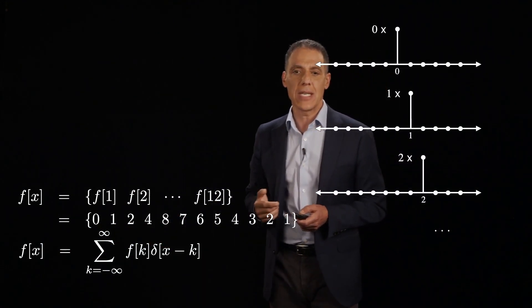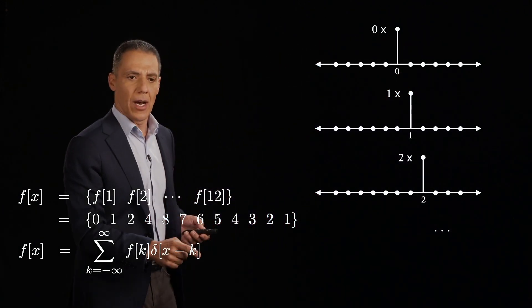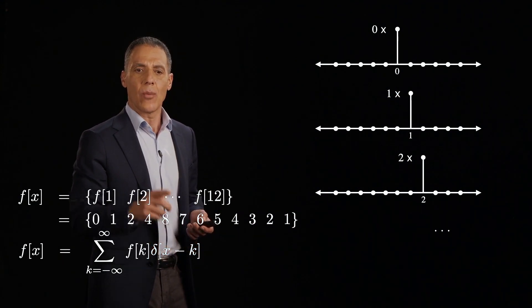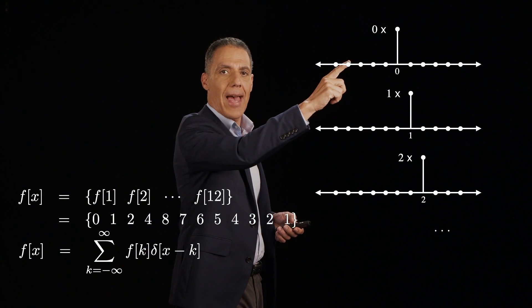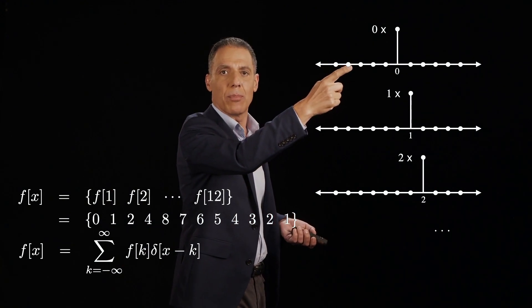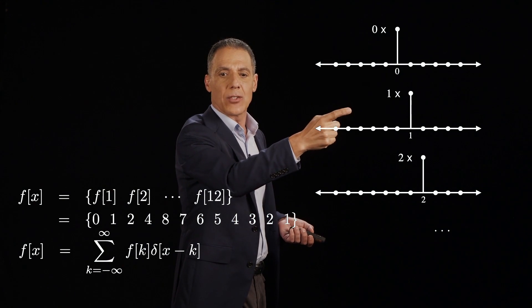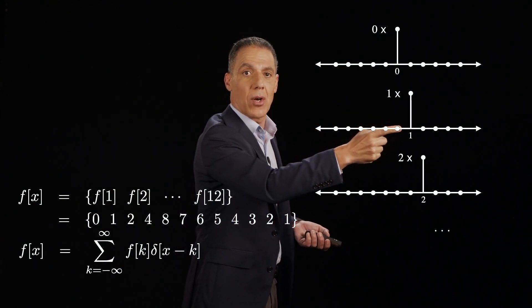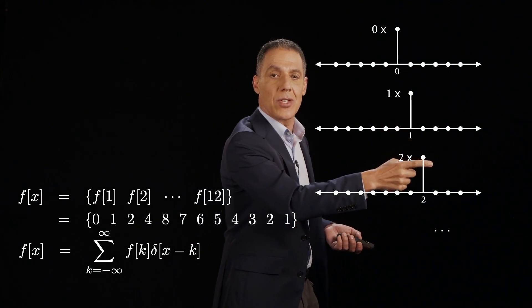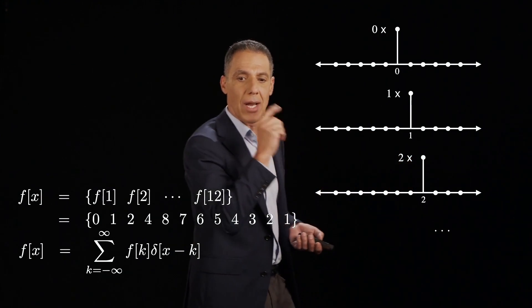So what does that mean? Well, let's go ahead and look at that. So first of all, what is delta of x minus k? Well, delta of x, we've agreed, is just that. Unit impulse at the origin, 0 everywhere else. Delta of x minus 1 is this, where when x is 1, we have our unit impulse and 0 everywhere else. Delta of x minus 2 is this, where the value is 2, we have the unit impulse and 0 everywhere else.